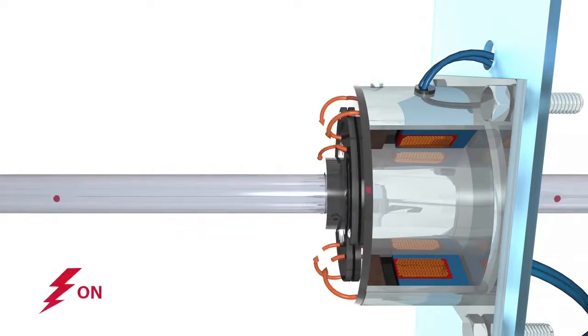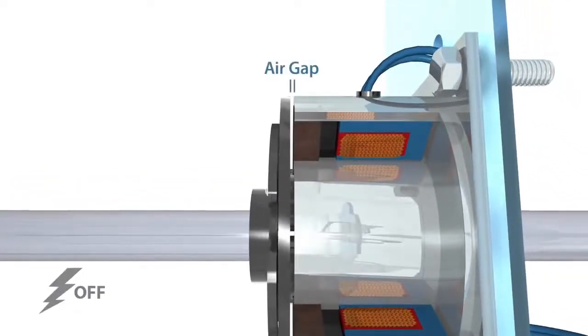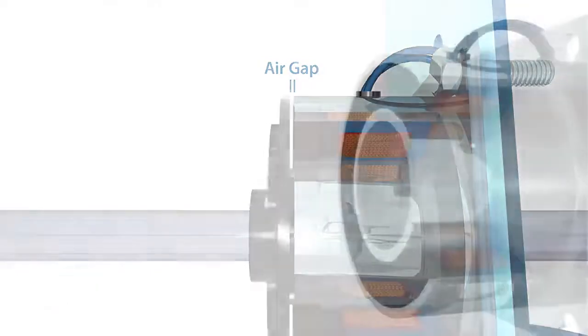When current or voltage is removed from the brake, springs hold the armature away from the hub surface, creating a small air gap.